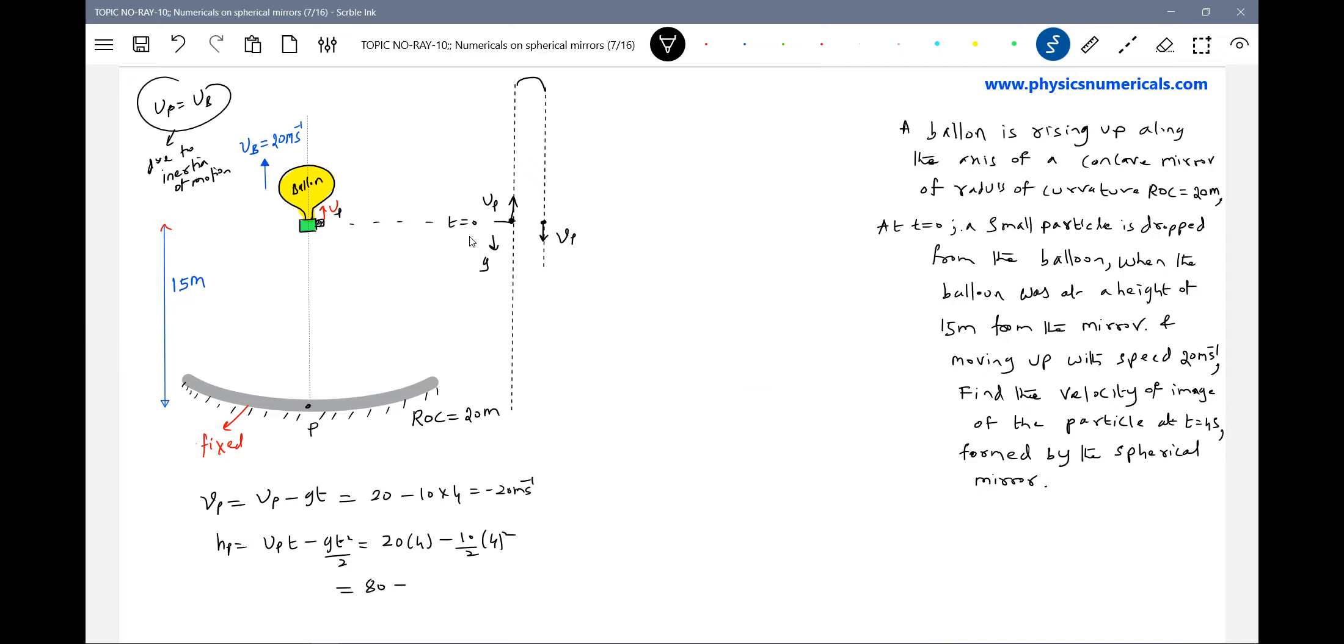So after 4 seconds, what will be the displacement of particle will be zero. So the particle should be again at the same position. At T equals four seconds, the particle will ascend then descend and finally will come back to the same position.